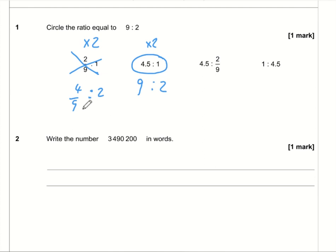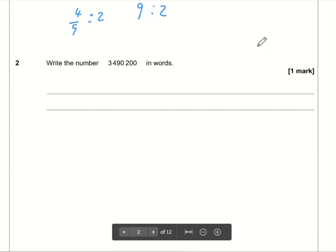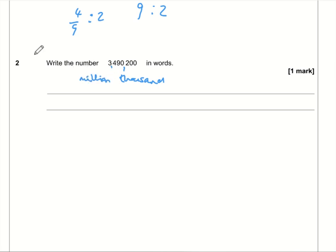Write the number 3490200 in words. Now it's really worth remembering that there's a reason why there are gaps. Sometimes there are commas. I normally put commas in when I'm teaching. The first comma here represents the word thousand. The next column represents the word million. The next comma is billion. The next comma would be trillion. So as long as you can read a three-digit number, then you can read any number really.